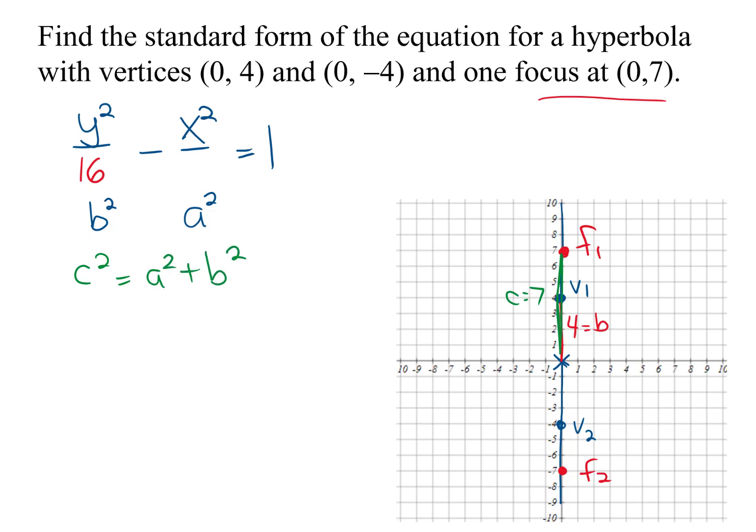Let's put in the pieces we know. So c was 7, so c-squared is 49. a-squared I don't know, but b-squared is 16 since b was 4.